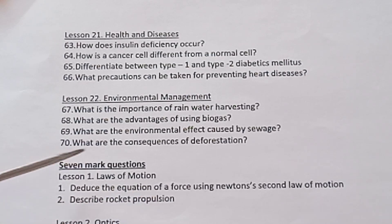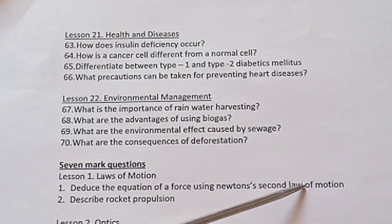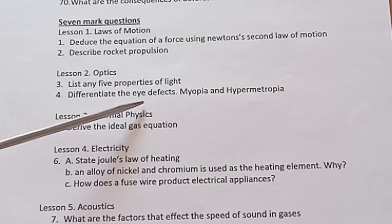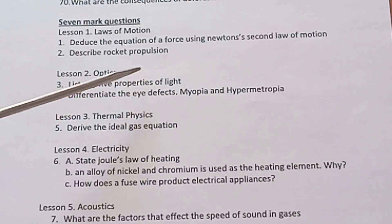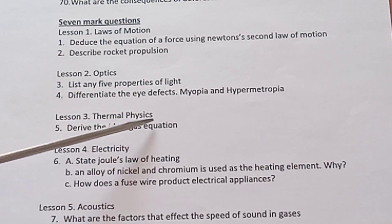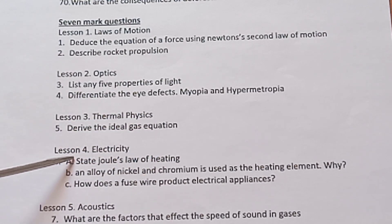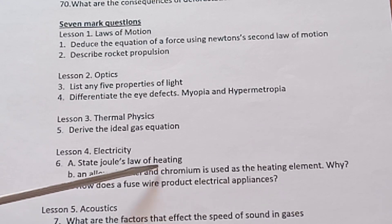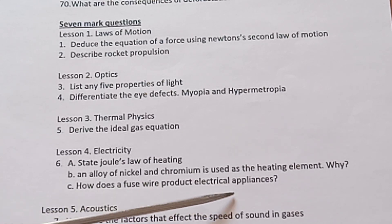Laws of Motion. Deduce the equation of a force using Newton's second law of motion. Describe rocket propulsion. Lesson 2 Optics. List any five properties of light. Differentiate the eye defects myopia and hypermetropia. Lesson 3 Thermal Physics. Derive the ideal gas equation. Differentiate between ideal gas and real gas in tabulation. Lesson 4 Electricity. State Joule's law of heating. An alloy of nickel and chromium is used as the heating element. Why? How does a fuse wire protect electrical appliances?